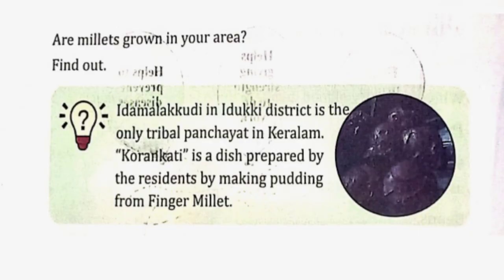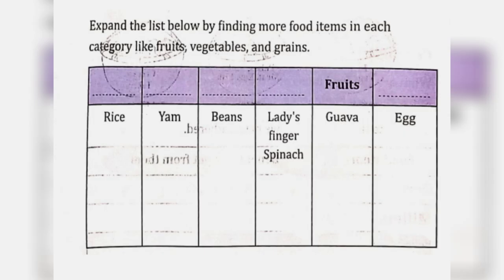Are millets grown in your area? Yes. Idamalakudi in Idukki district is the only tribal panchayat in Kerala. Korangkati is a dish prepared by the residents by making pudding from finger millet.